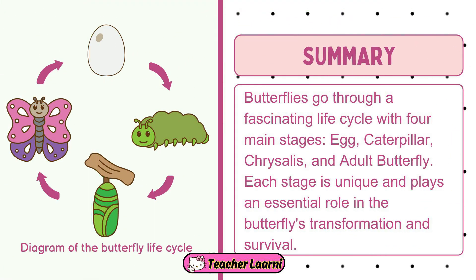To summarize the life cycle of a butterfly: butterflies go through a fascinating life cycle with four main stages — egg, caterpillar, chrysalis, and adult butterfly. Each stage is unique and plays an essential role in the butterfly's transformation and survival.